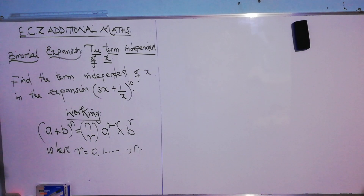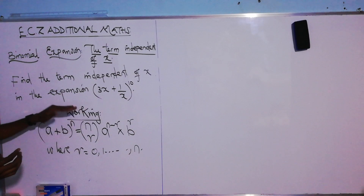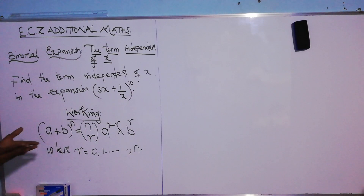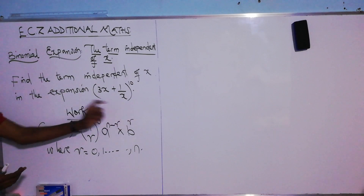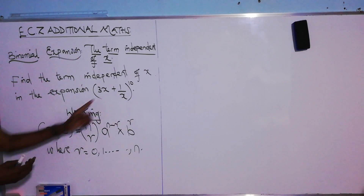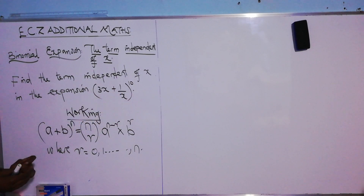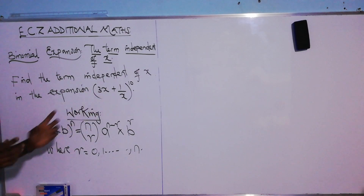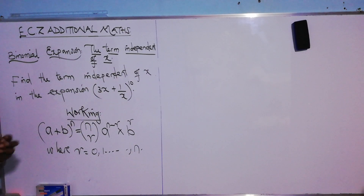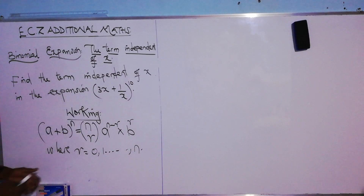In this particular question, our a is 3x, our b is 1 over x, and our n is 10. When we say a term independent of x, we are looking for a term that does not have x in it.